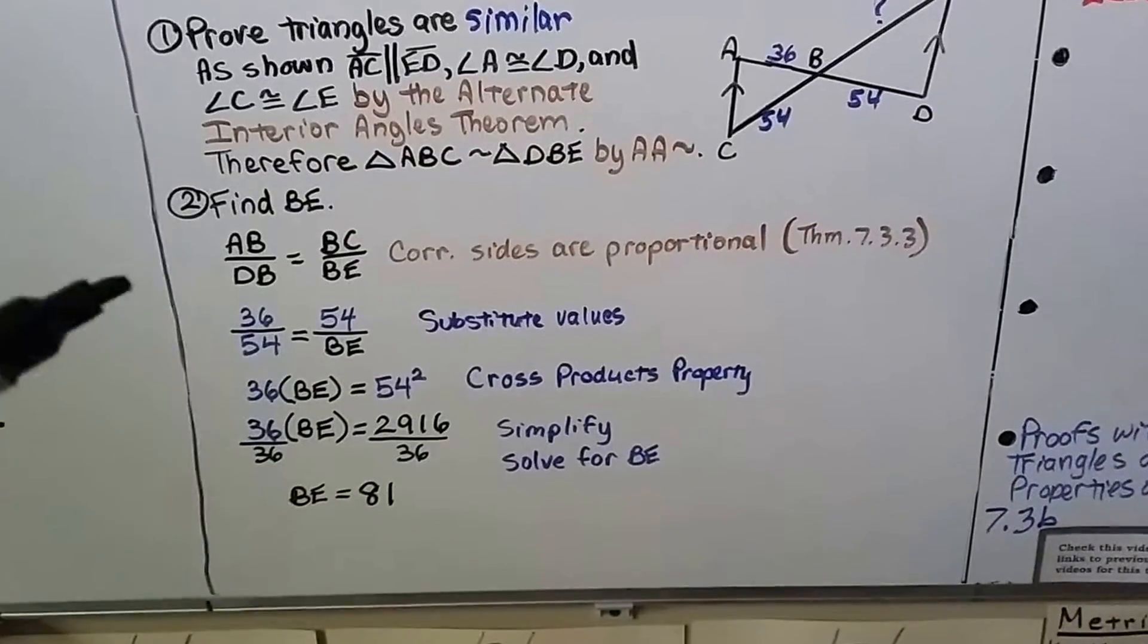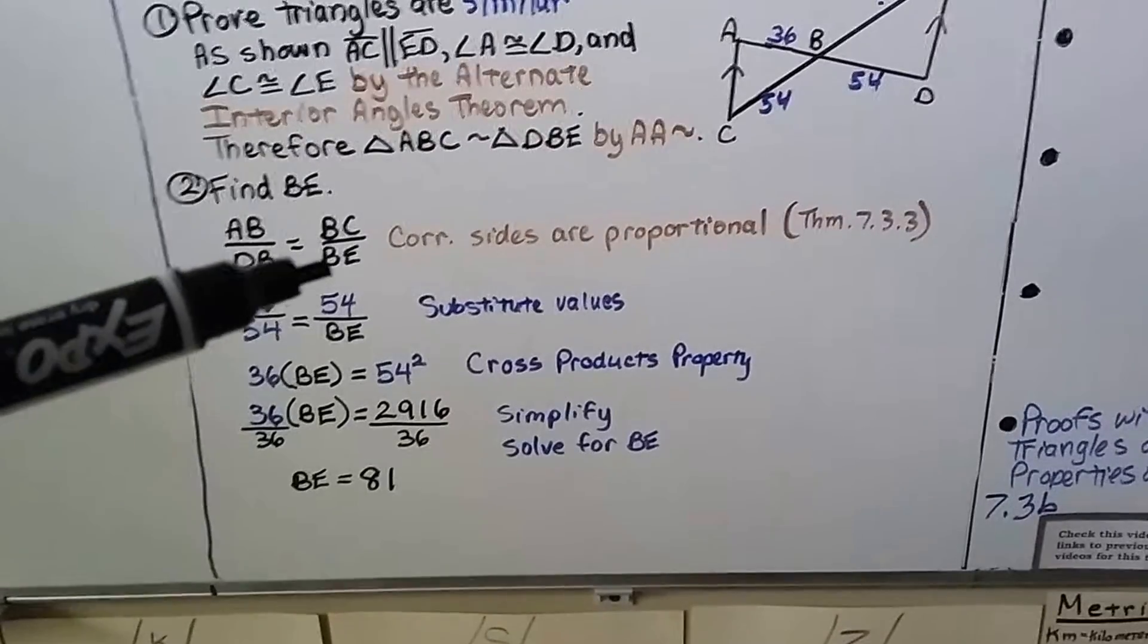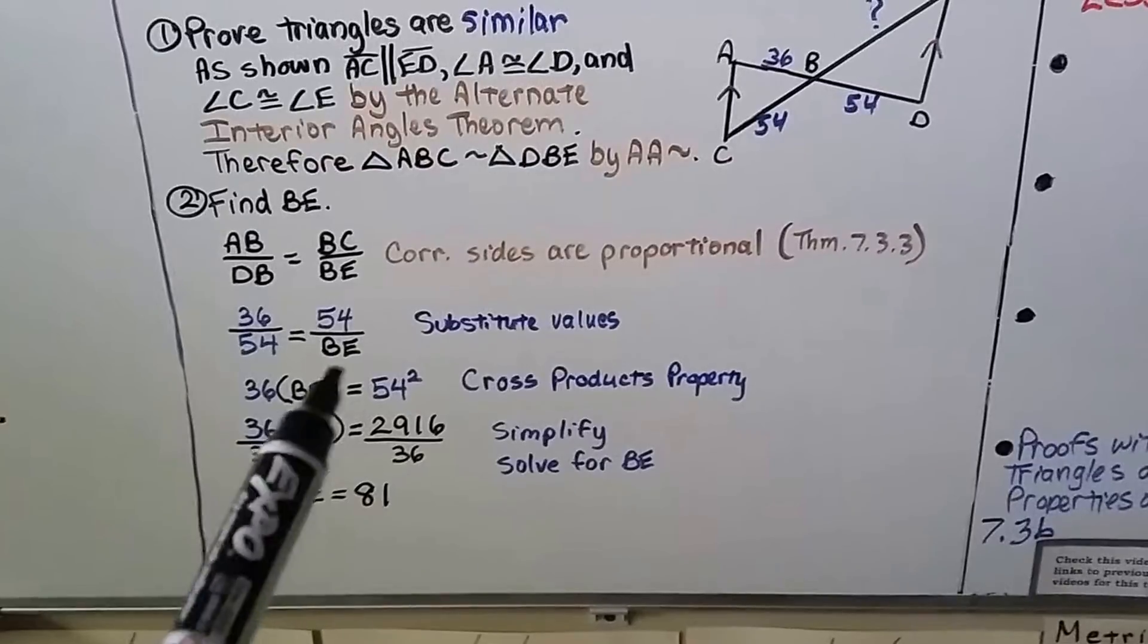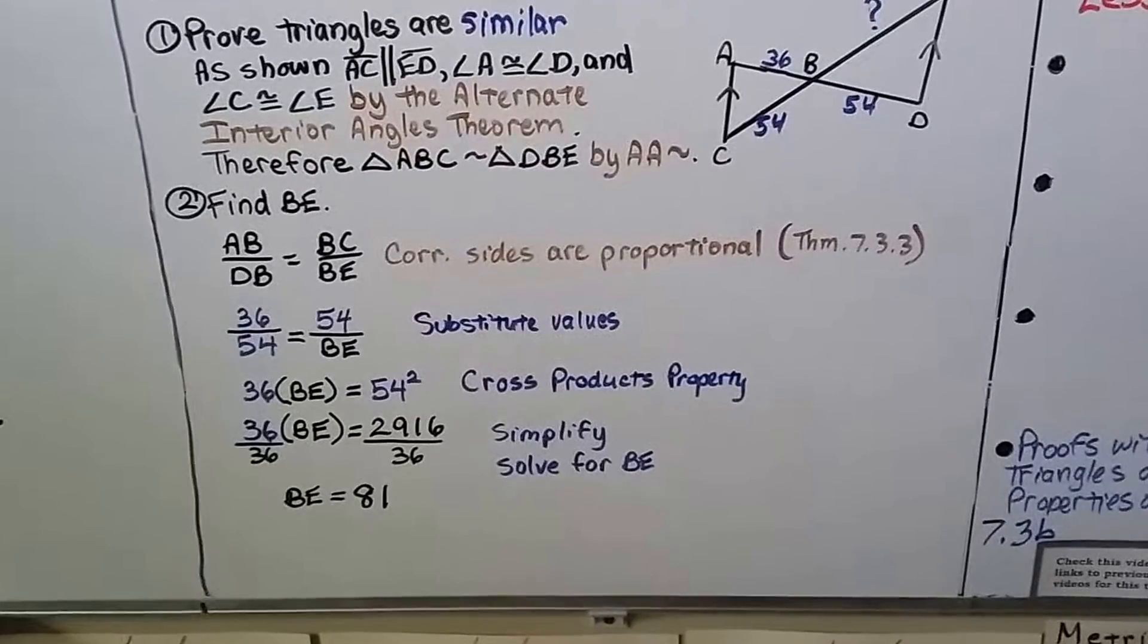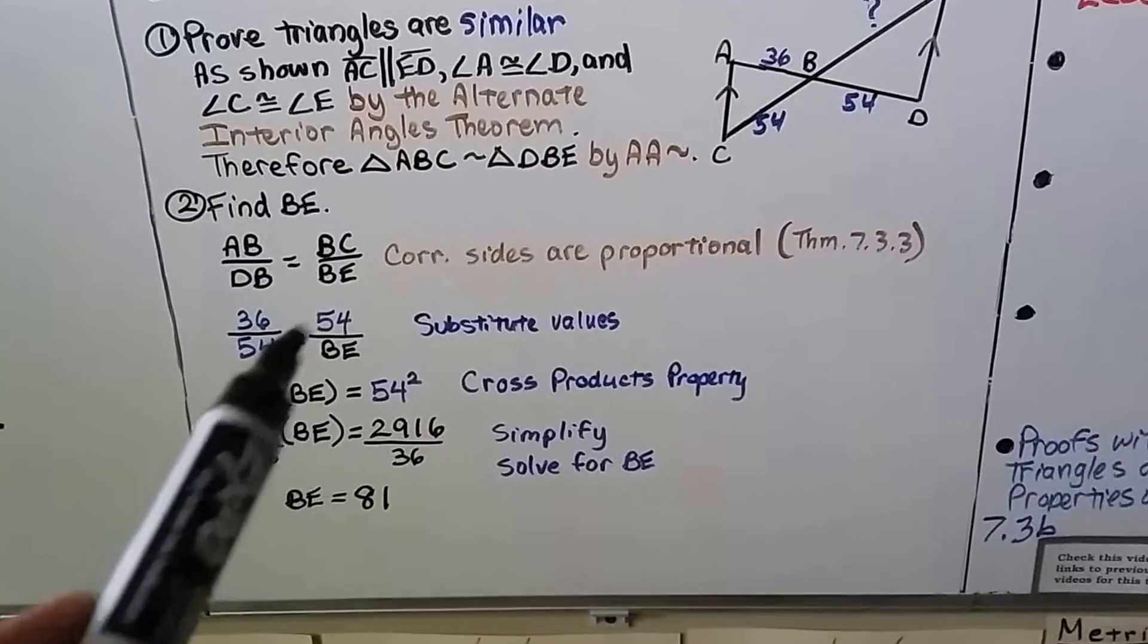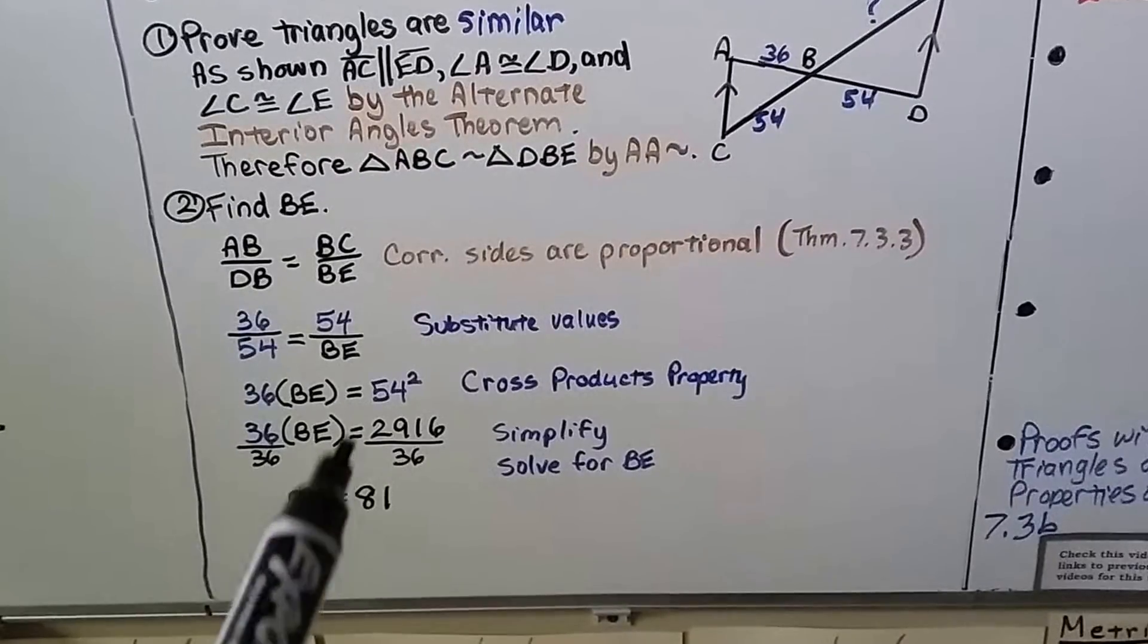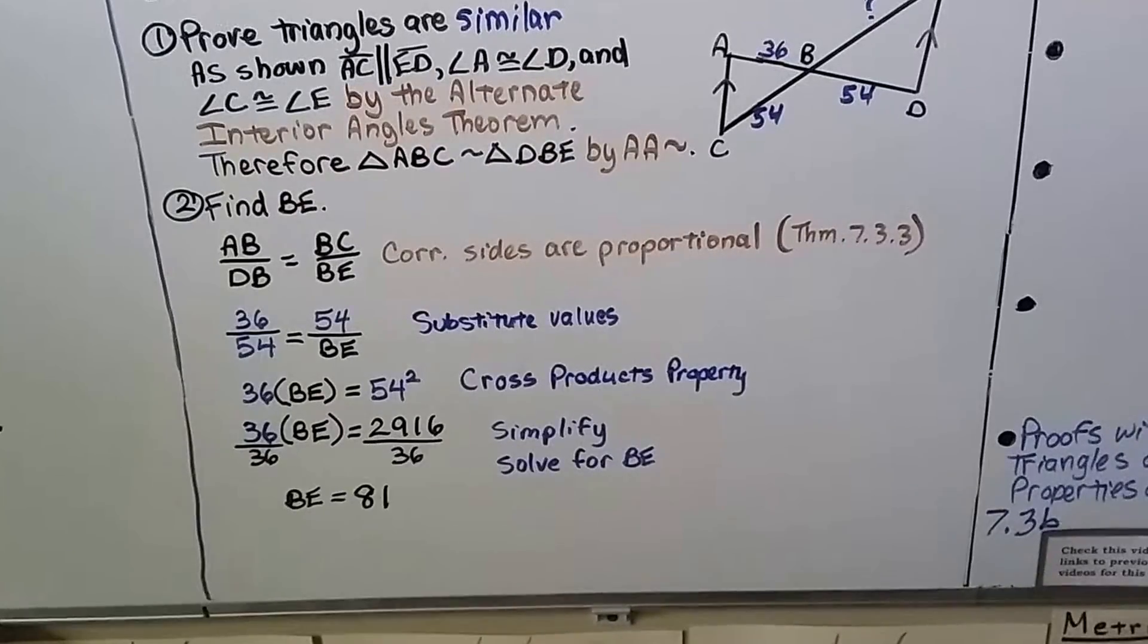We can substitute in the values. AB is a 36 and DB is a 54. BC is a 54, but we don't know what BE is. So we just write BE. Now we can use the cross products property that 36 times BE is equal to 54 times 54. And 54 times 54 is 54 squared. That's 2,916.